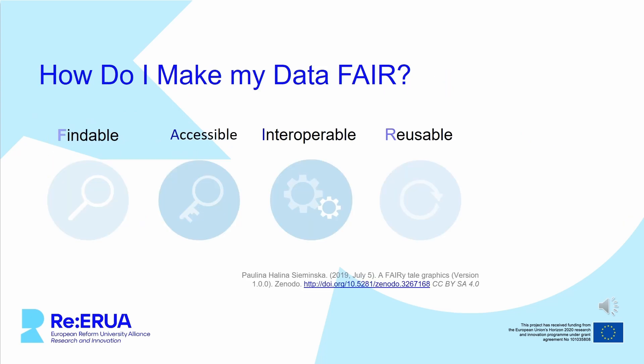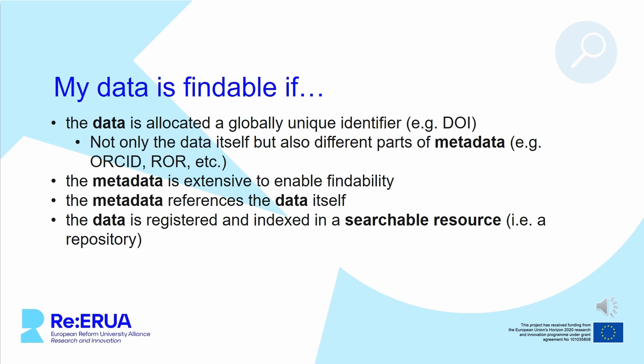Having discussed the nature of FAIR data, I would now like to talk about how you can make your own data FAIR. If your data is allocated a persistent identifier, such as a DOI, at publication, it can be identified uniquely on a global level. This makes your data findable and identifiable for everyone. As persistent identifiers don't change, you profit from this in the long run. If you want to learn more about persistent identifiers, also known as PIDs, please feel free to check out our module on this topic.